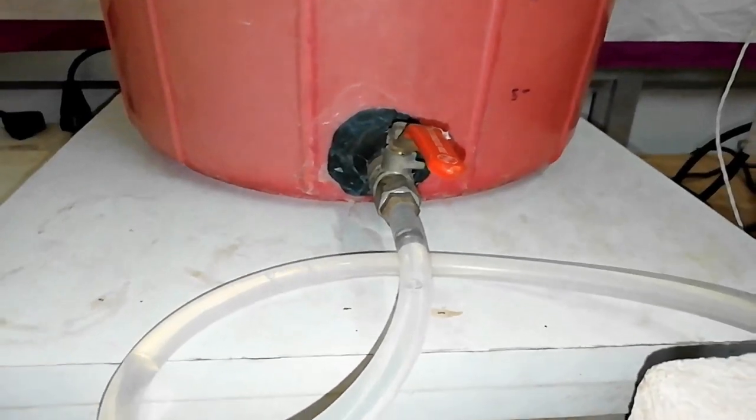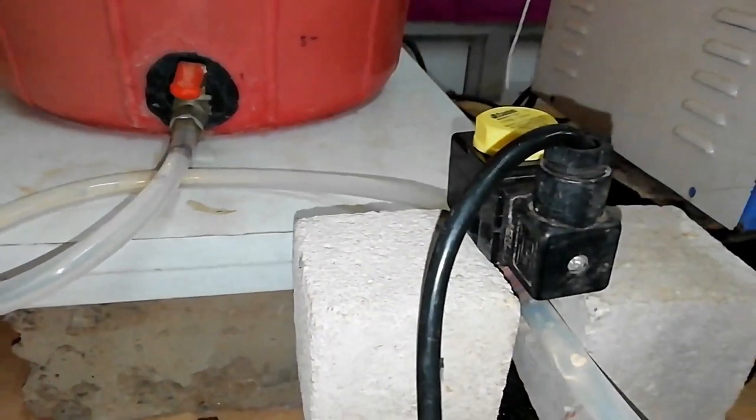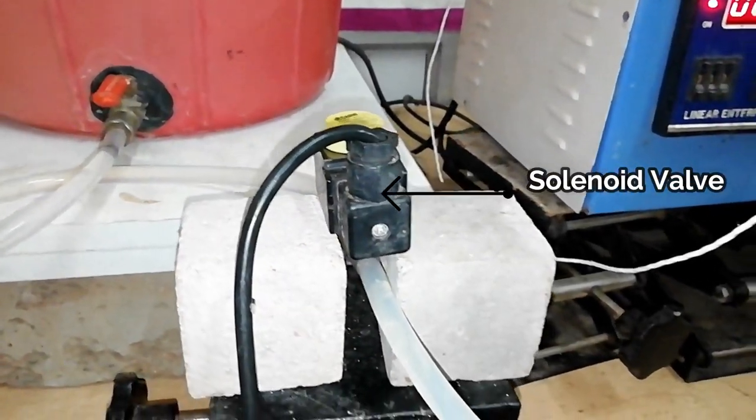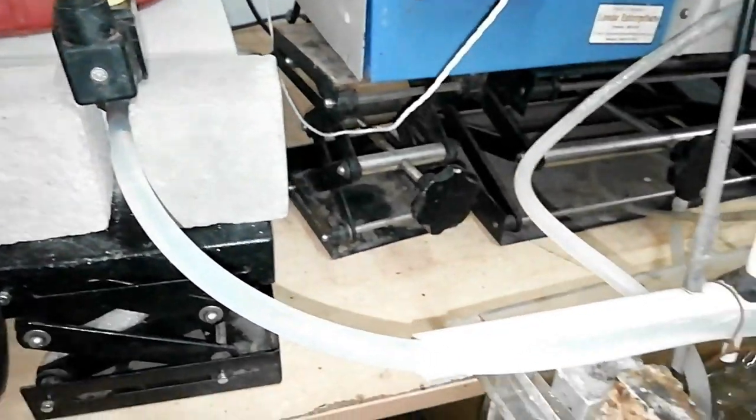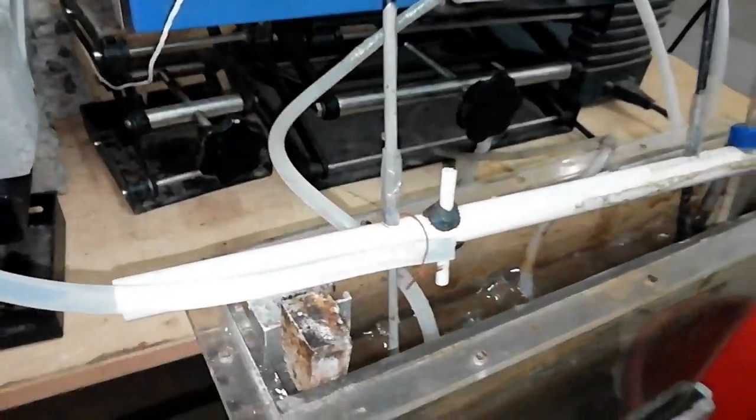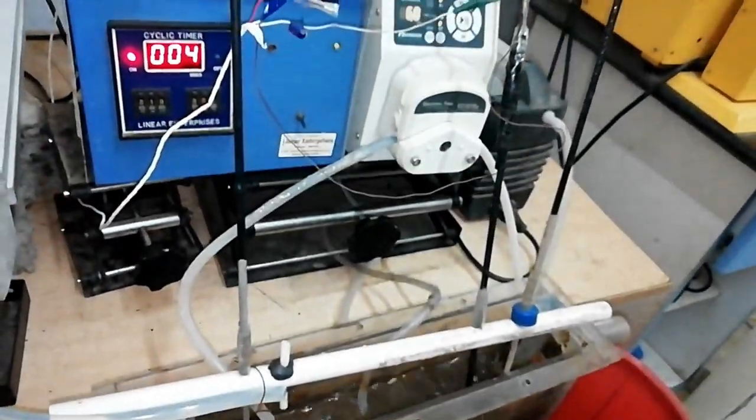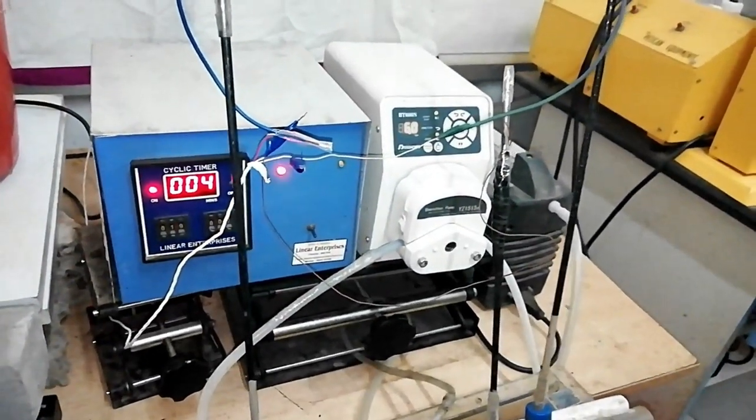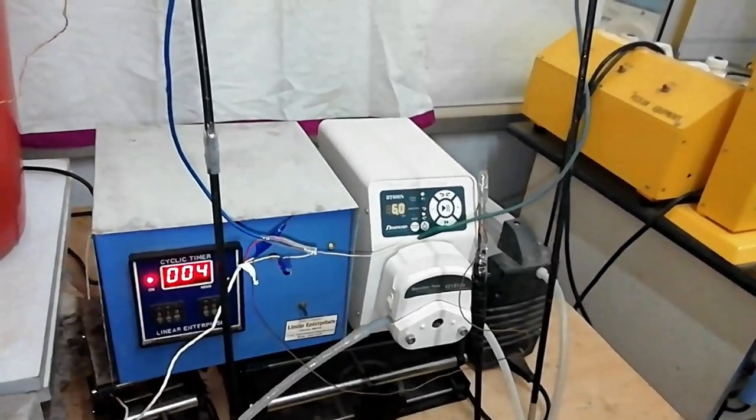Influent enters into the MBR and the flow of the influent is controlled by a solenoid valve. The solenoid valve gets the signal from the level sensor. When the level of the wastewater goes down, the level sensor gives a signal to the solenoid valve and wastewater enters into the MBR.